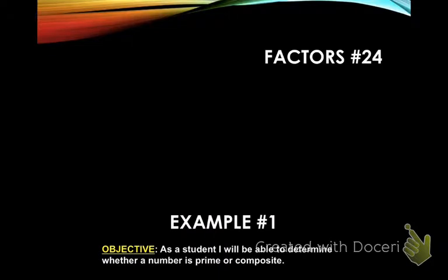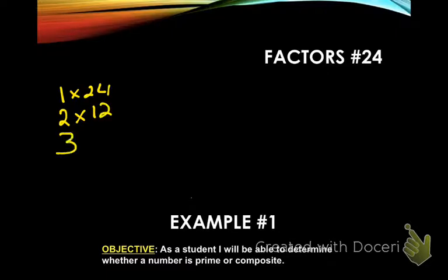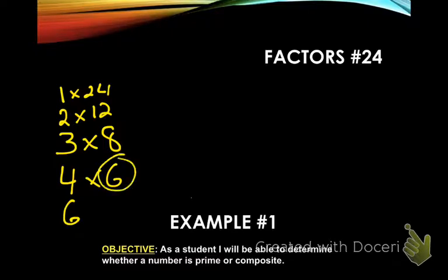We're going to do some examples. To find all the factors of 24, we make a list starting with one. One times what equals 24? One always works, so one and 24. Does two work? Two times 12 — yes. What about three? Three times eight equals 24. What about four? Four times six. What about five? No. What about six? We already have six right here, so we're done.